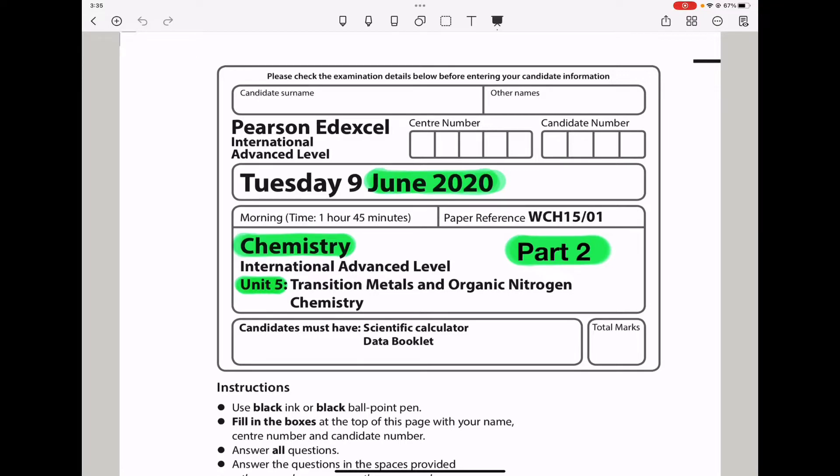Welcome to the Chemistry, Biology, and Math Revision Hub. Today we are doing the Pearson Edexcel International A-Level Chemistry Unit 5 for June 2020. This is the Part 2 video. I'll put the links to the Part 1 and Part 3 video below in the description box.